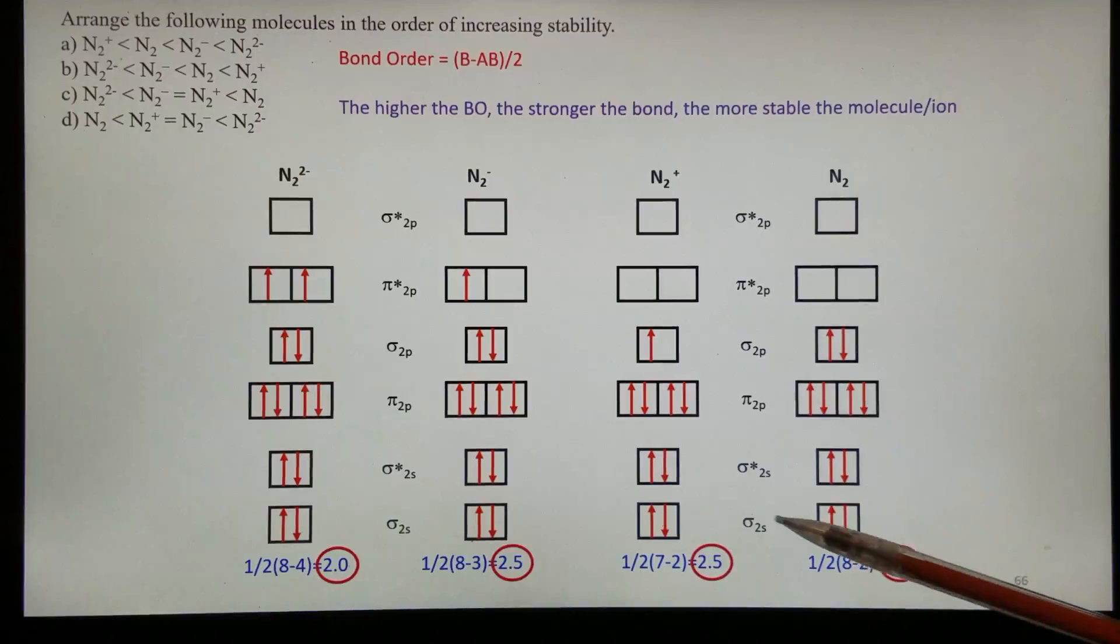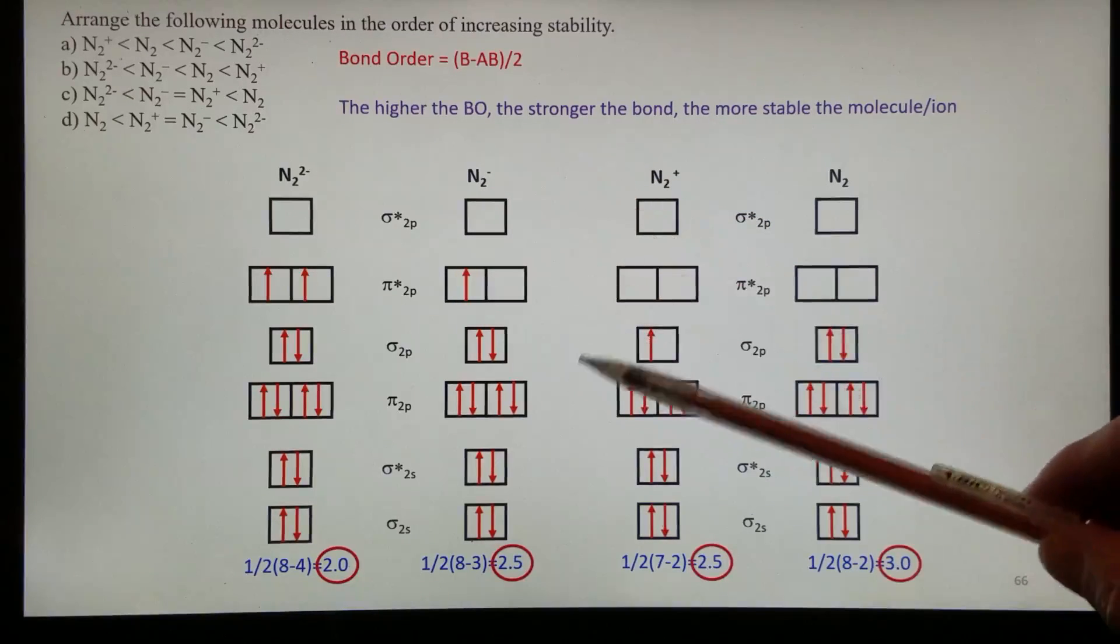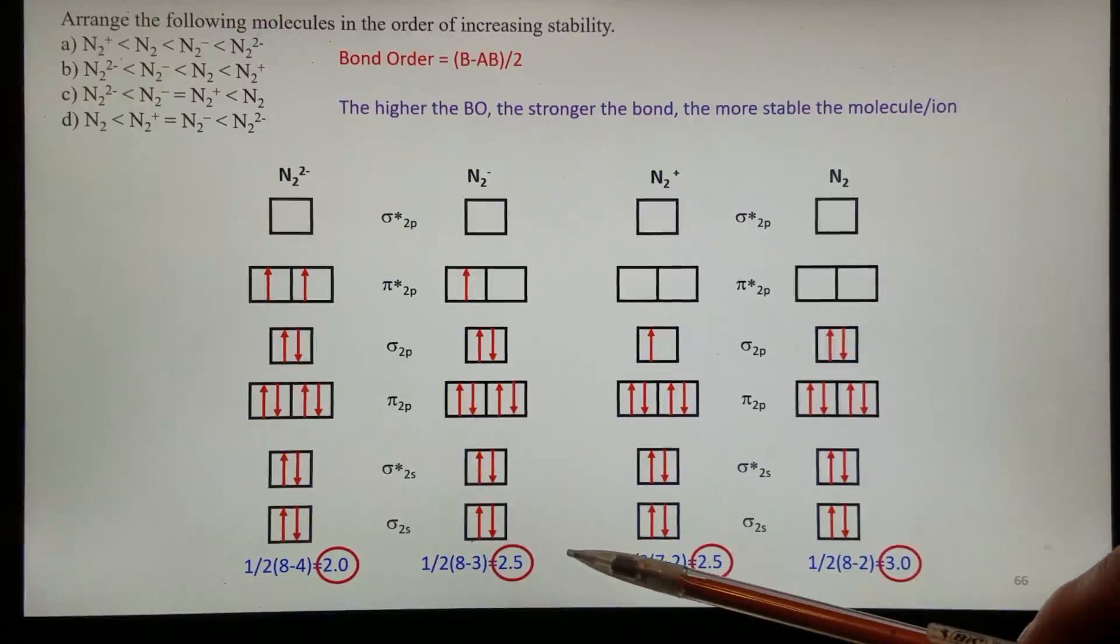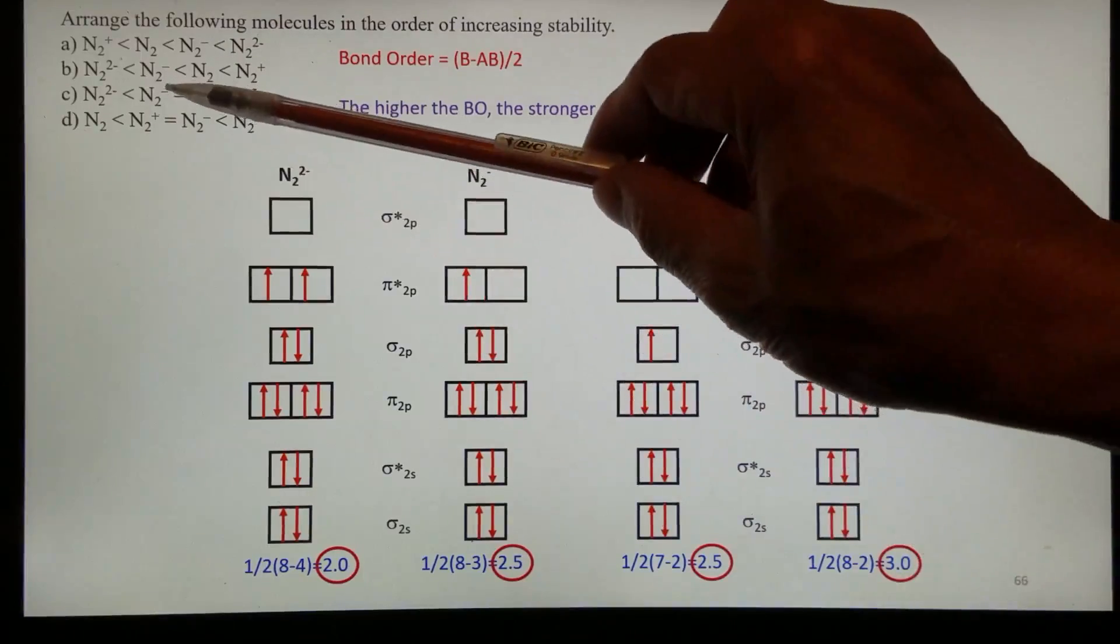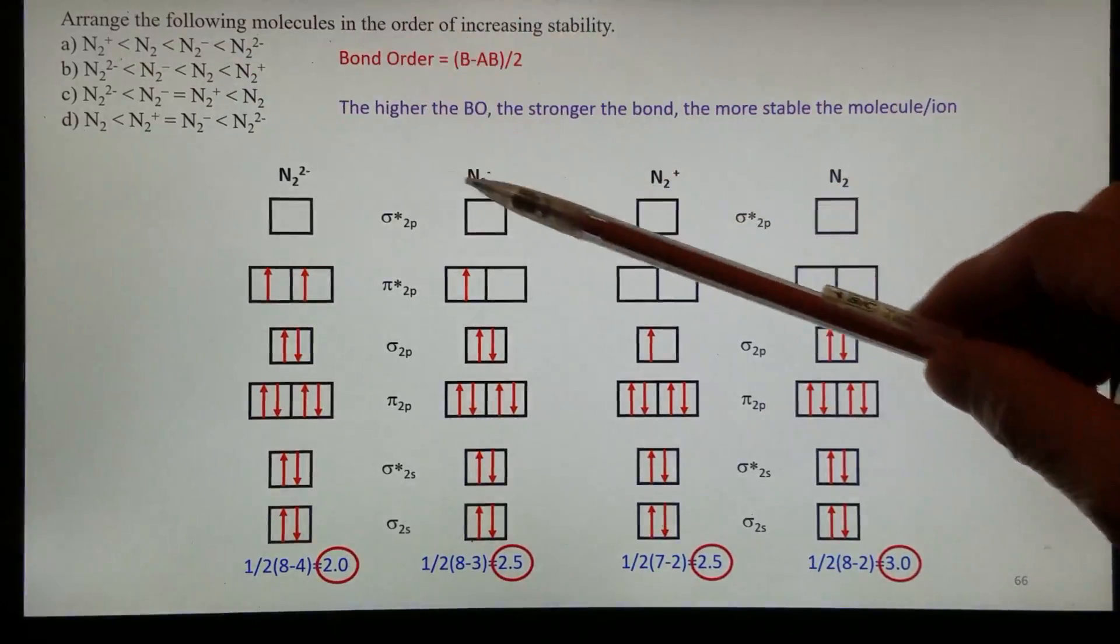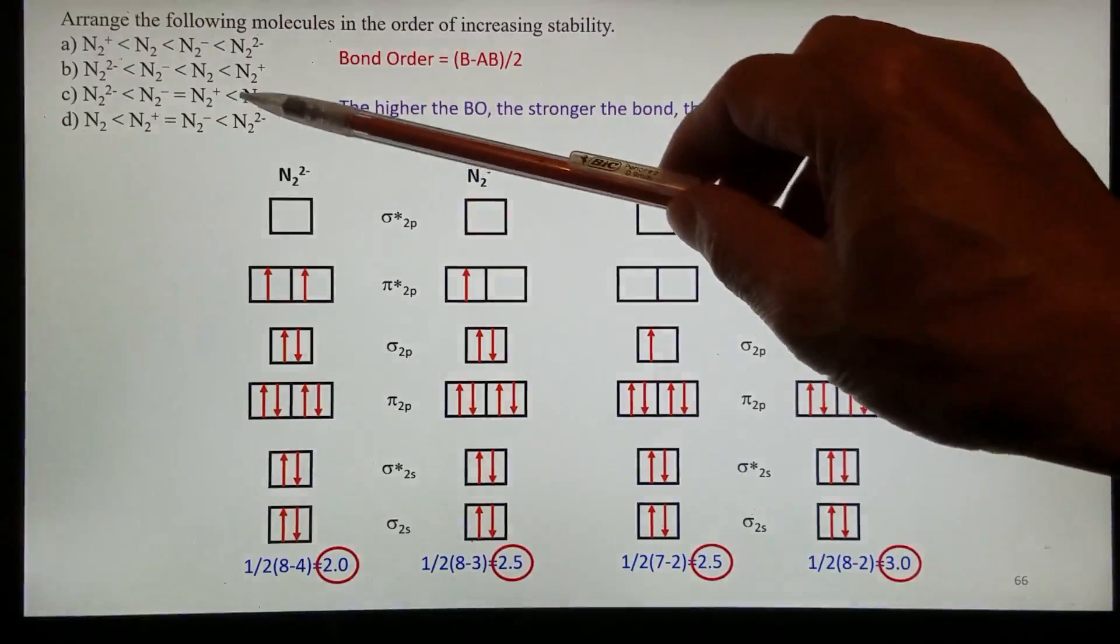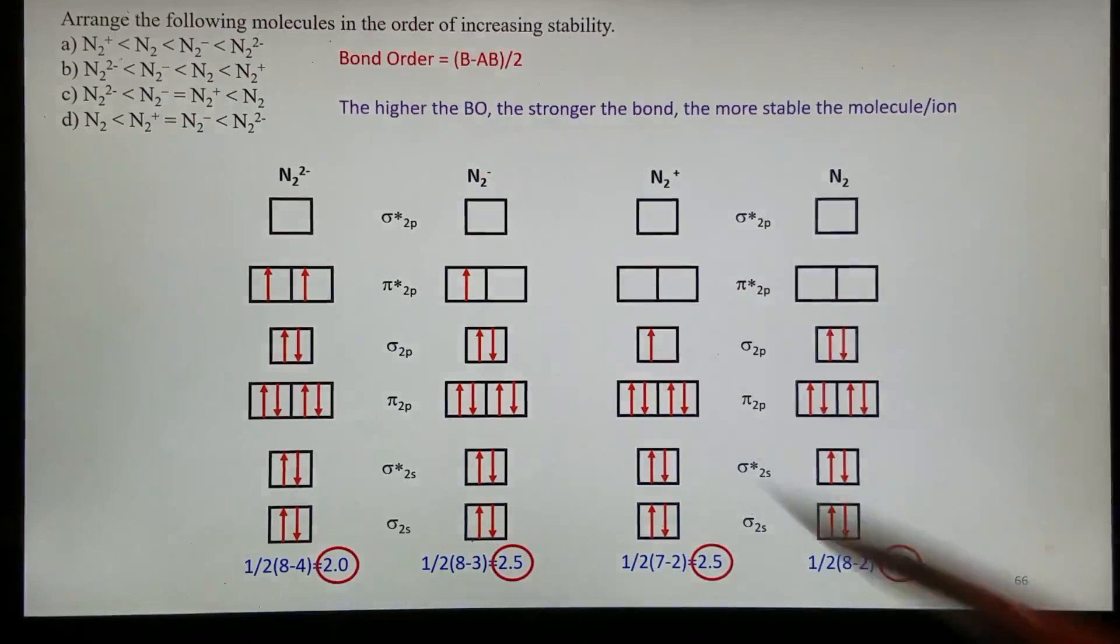And then, these two, N2 minus and N2 plus, they should be the same. The stability should be the same. So therefore, if you look at the choice, we know A and B is out. And now, we also see, we know N2 is the more stable one because of the bond order of 3. Obviously, C should be the correct answer for this question.